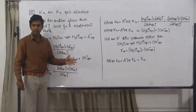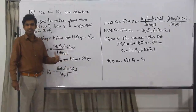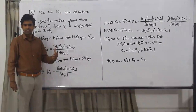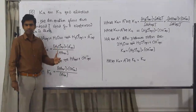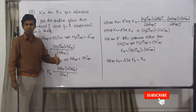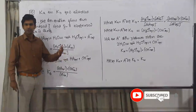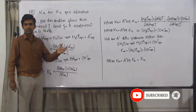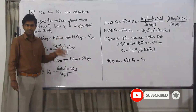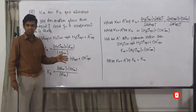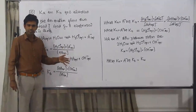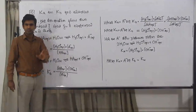We have to take a look at the acetic acid, and we have to take a look at ammonium. The acetic acid is also known as acetic acid — this is related to the Ka and Kb relationship.